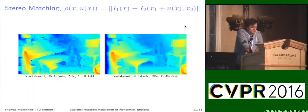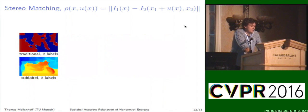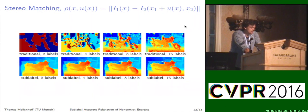For stereo matching, the scenario is similar. Traditional methods, even with 48 labels, result in a quite discrete depth map where one can see the label bias. Our sub-label accurate solution produces a smooth depth map using only 8 labels at a fraction of the runtime and memory requirement. Directly comparing the two methods for equal numbers of labels, even with two labels our method already produces a reasonable result. As we increase the number of labels, we quickly get very good results for stereo matching, while the standard multi-labeling methods essentially produce an 8-region segmentation of the depth map, whereas we already get a quite smooth result.